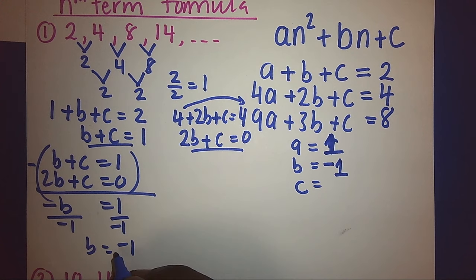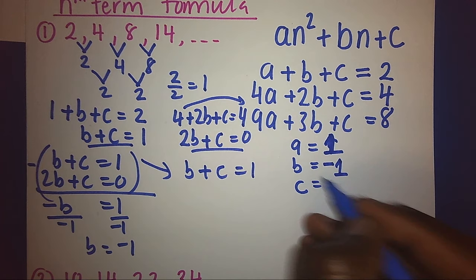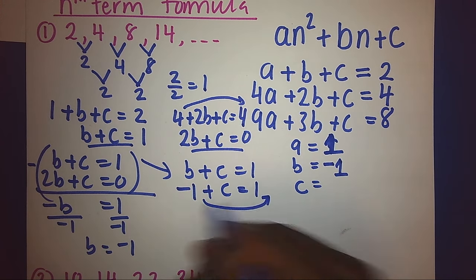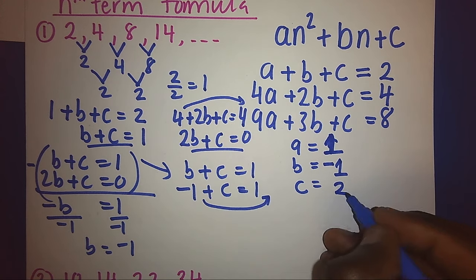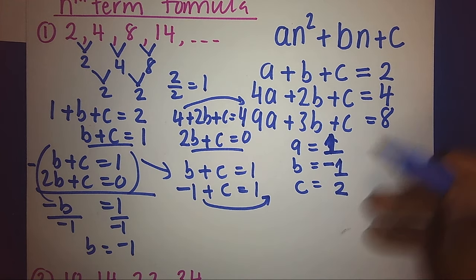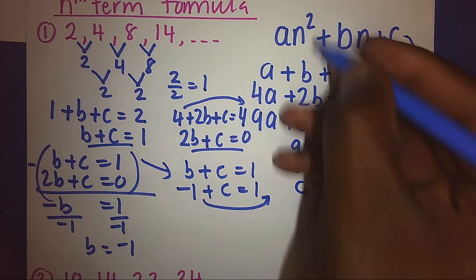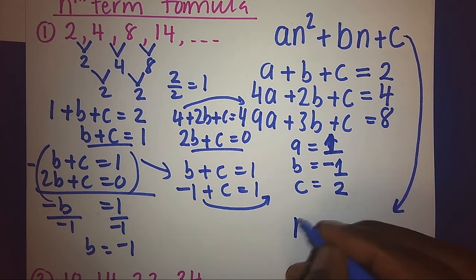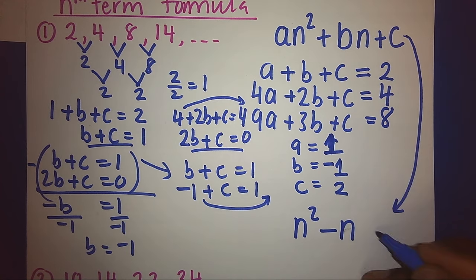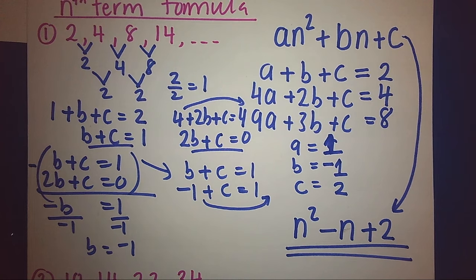Since I have my b, I substitute into one of the equations: b + c = 1. My b is −1, so −1 + c = 1. Taking −1 to the other side gives c = 2. So I have worked out a, b, and c. Finally, I substitute them into the general formula: a=1 gives n², b=−1 gives −n, and c=2 gives +2. Hence, this will be our nth term formula: n² − n + 2.